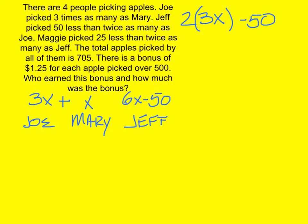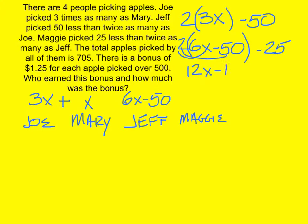And then Maggie here at the end. She is 25 less than twice as many as Jeff. Well, here's Jeff now: 6X minus 50. And Maggie is 25 less than twice as many as Jeff. Here's twice as many as Jeff, and there's 25 less. 2 times 6X is 12X. 2 times minus 50 is minus 100. But you still have a minus 25 there. So when you simplify that, that is 12X minus 125.